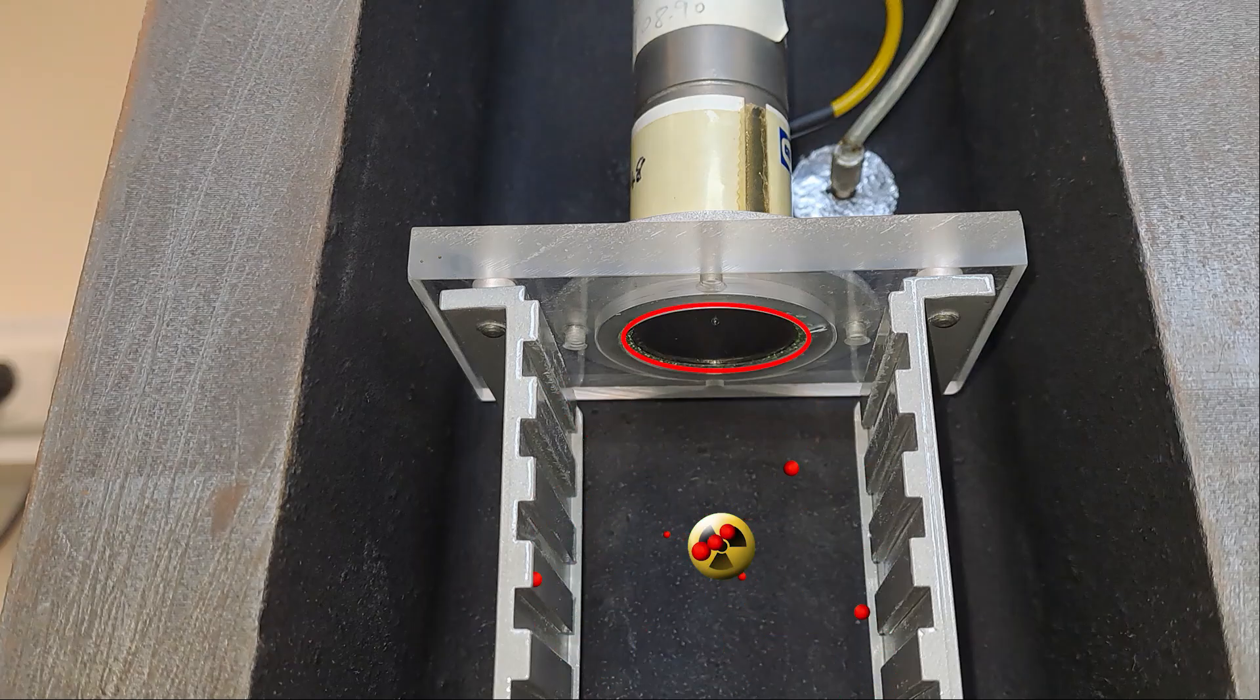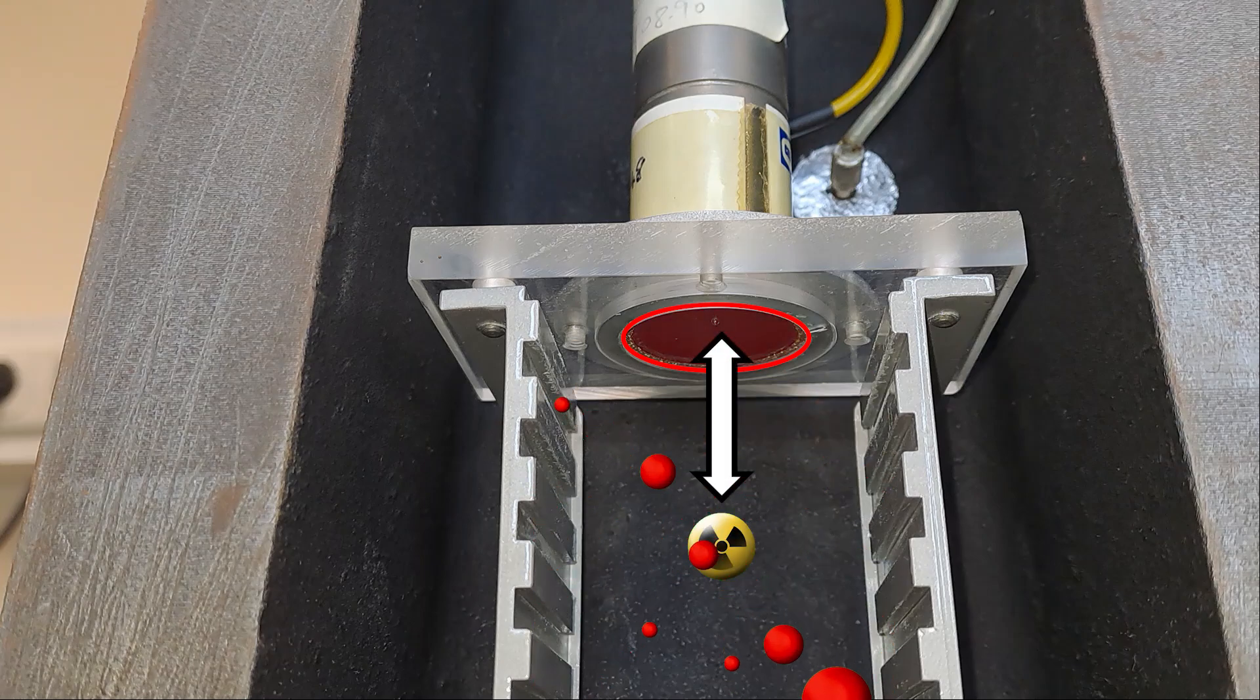A detector used for measuring has a finite detection area. If you know the area and the distance to the source, you can imagine a sphere around the source at that distance which has a surface area and the detector covers only a portion of that surface.